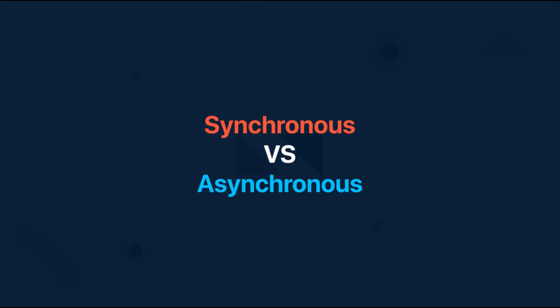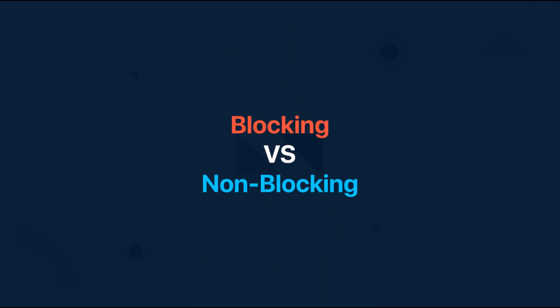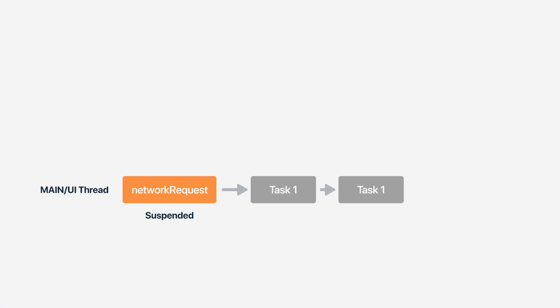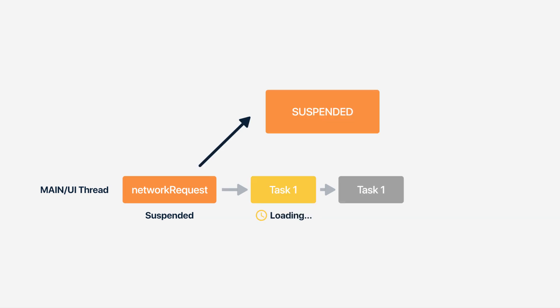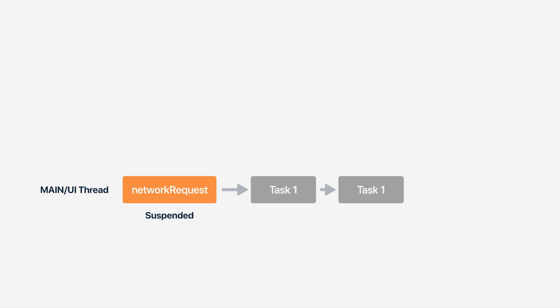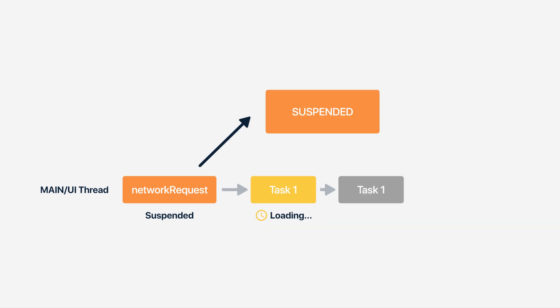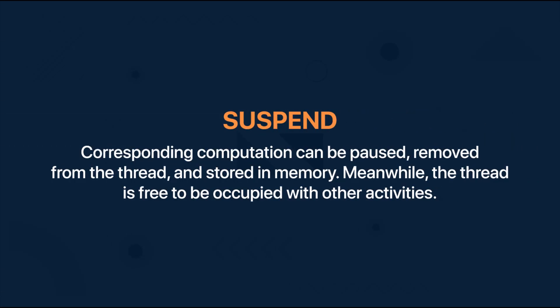So now you saw how to execute the same code synchronously and asynchronously, or in a blocking and non-blocking way. The main advantage of the non-blocking way is that instead of blocking the whole thread we suspend the coroutine with all its suspending functions and let other tasks run freely while we go to another thread. When the suspending function is ready to be continued it gets returned to a thread. Coroutines are often called lightweight threads, meaning we can run code on coroutines similar to how we run code on threads. Coroutines are computations that run on top of threads and can be suspended — meaning the computation can be paused, removed from the thread, and stored in memory, while the thread is free to be occupied by other activities.